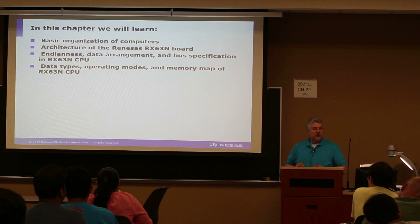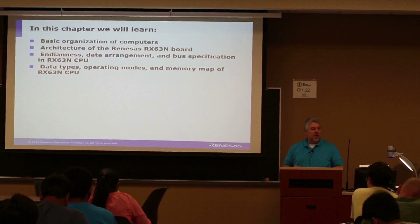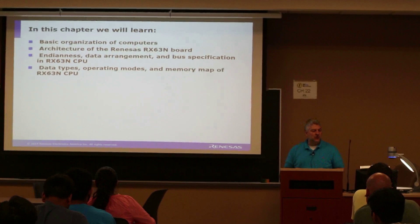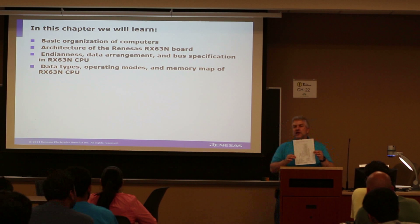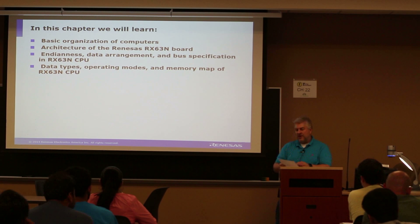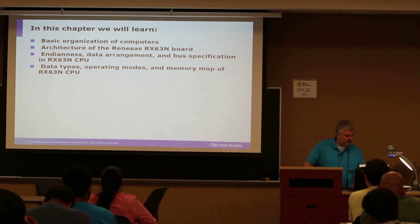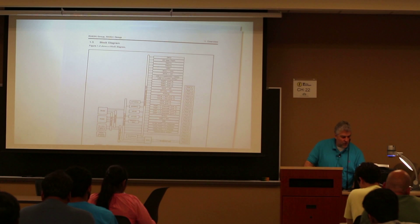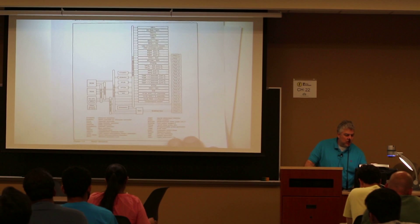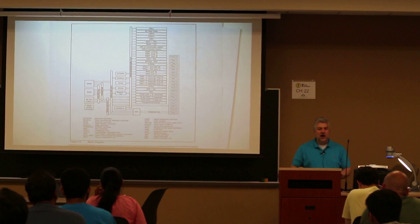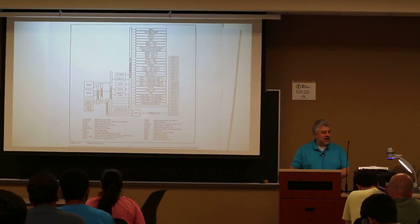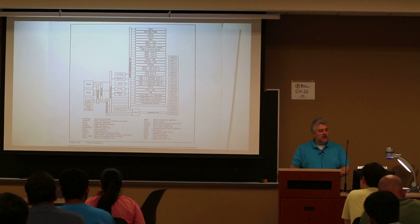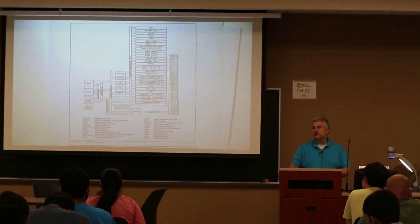We're going to learn about basic organization of computers, specifically the architecture of the Renaissance Board, and the general concept of how we're going to store data, data types, operating modes, etc. One thing particularly helpful is this block diagram I've handed out for everybody. The block diagram for this processor shows the basic components of the processor itself, all sorts of peripheral devices inside, and how different peripheral devices interface with the main processor core.